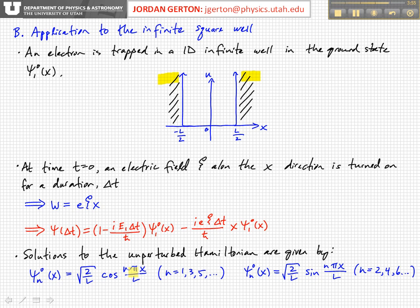So the ground state, n equals one, we get a cosine solution. The second excited state, that's n equals three, and so on, we get cosine solutions. But for the first excited state, n equals two, and every other even value of n, we get the sine solution. So this is the difference, this is what you have to do in order to account for the fact that we've changed the boundary condition somewhat. Basically, we've shifted our well from going from zero to L to minus L over two to L over two.